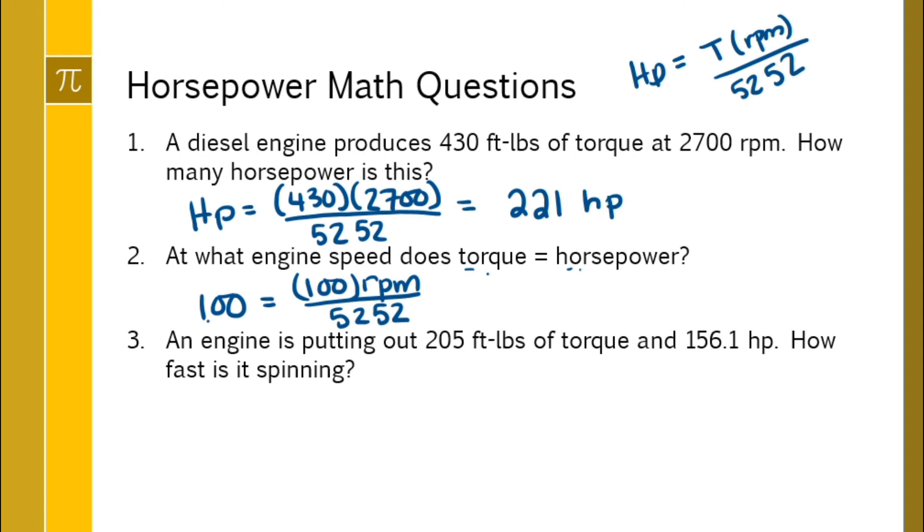you just need an RPM that is equal to 5252 to make that true. So when the engine is turning at 5252 RPM, that's when torque will equal horsepower.